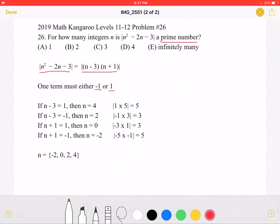So now we have some options. If the first term, n - 3, is equal to 1, then n would be equal to 4. If n - 3 is equal to -1, then n would be equal to 2.